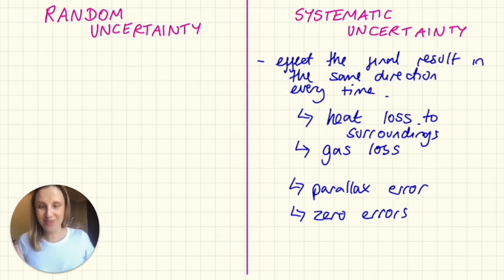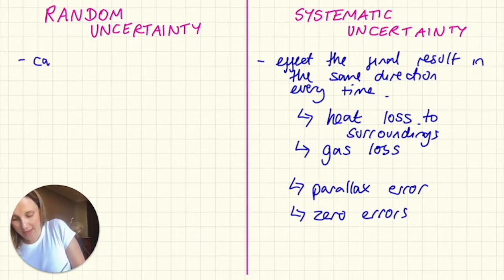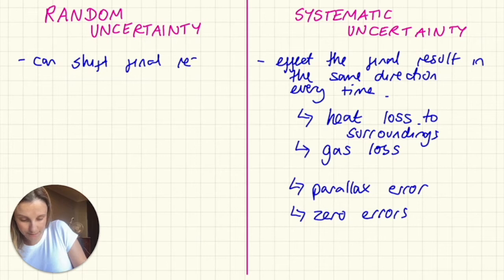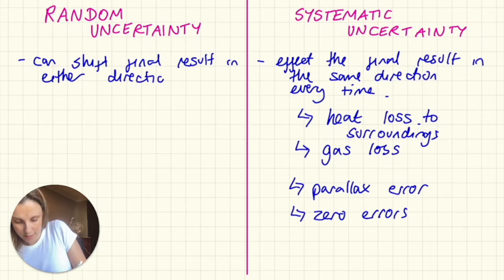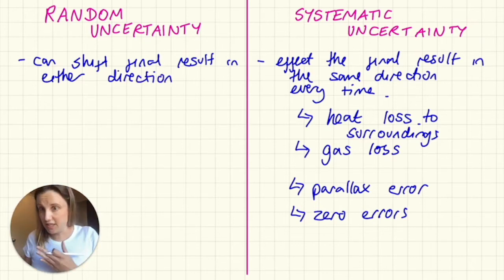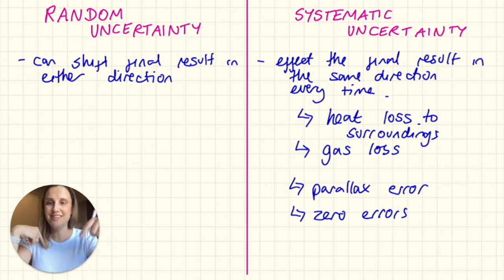So you might be able to guess that random uncertainties can shift a final result in either direction. So for these ones on the right, they're never going to shift it the other way, they're always shifting one way. This means if it's random, it can go either way.